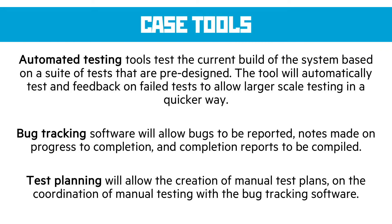Then we get onto automated testing tools. Every time we build the software — especially a very large piece — we want to test everything we've already tested once again to make sure we haven't broken anything. We create a suite of automated tests that run automatically, and the testing program tells us if it starts failing any tests that have previously passed. Bug tracking software allows us to report bugs, make notes on them, update the person who posted the bug, and file completion reports to close bugs when fixed. Finally, test planning allows the creation of manual test plans and coordinating that manual testing with the bug tracking software, so we can incorporate bugs that have been found or remove bugs that have been solved.